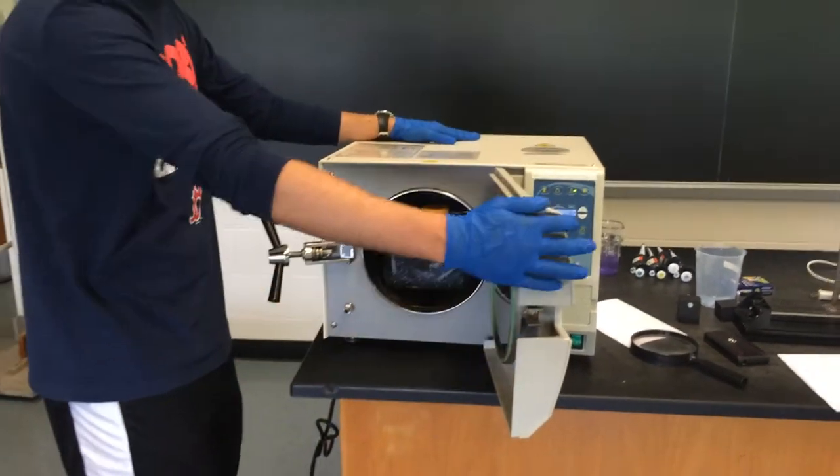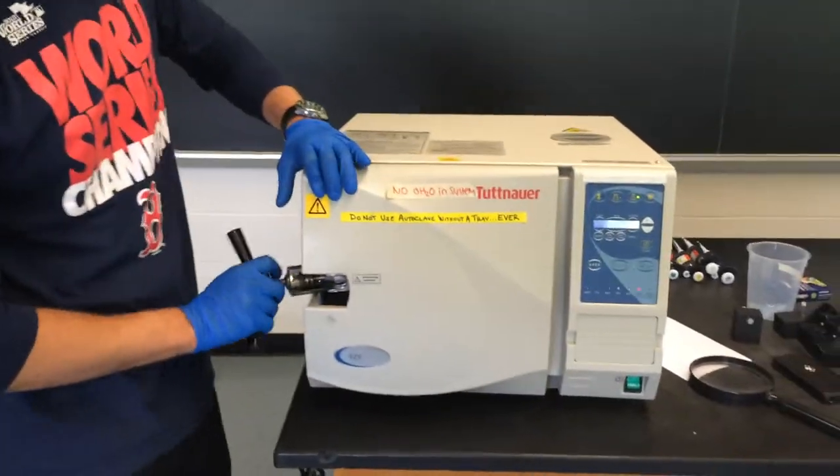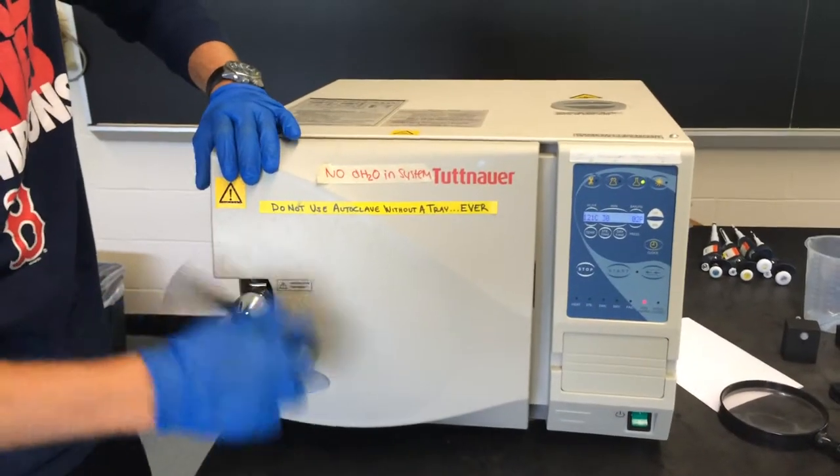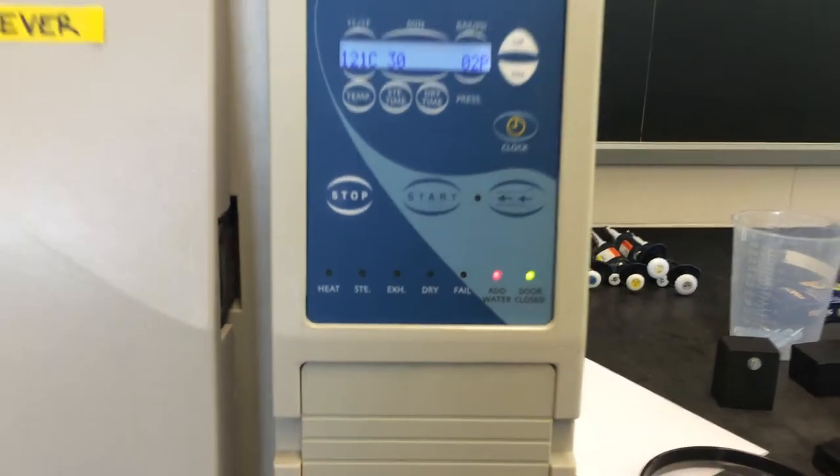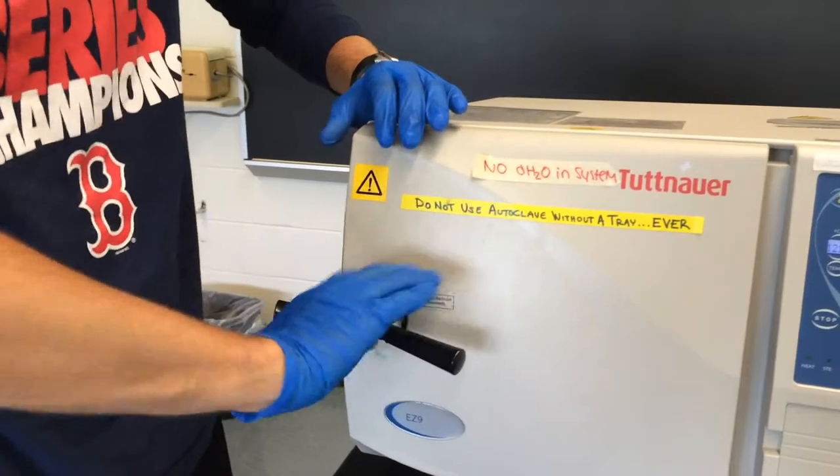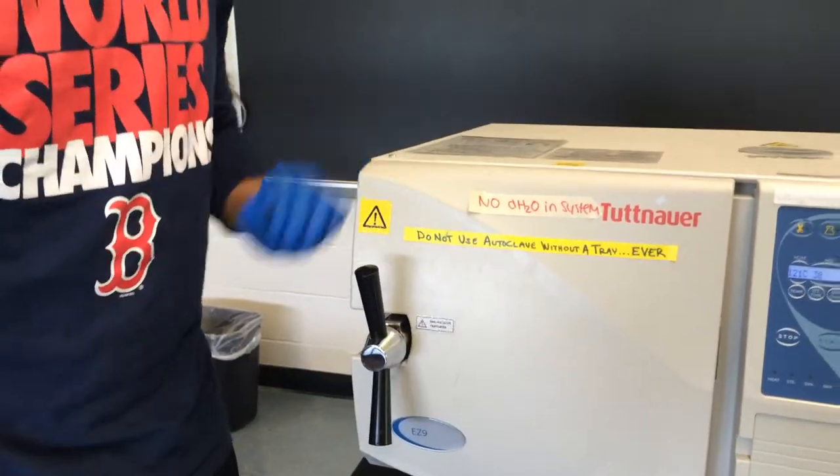Close the autoclave door. Tighten the handle until the door close light comes on. Then, you want to tighten it another one and a half turns or so, just to make sure it's tight.